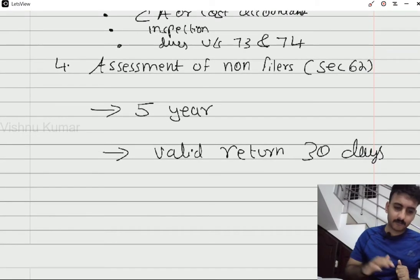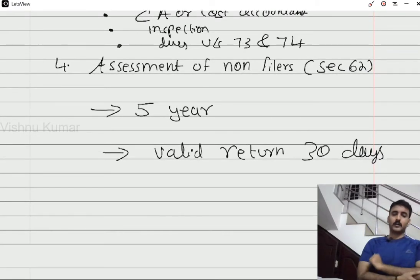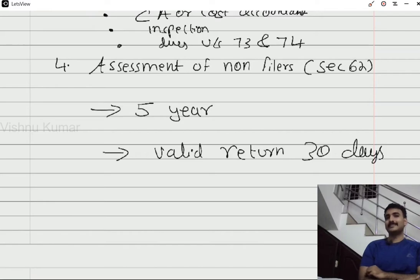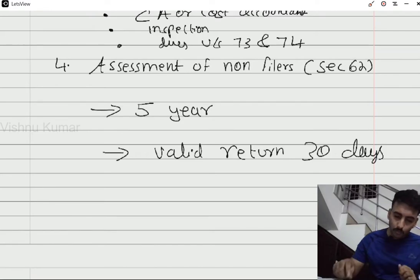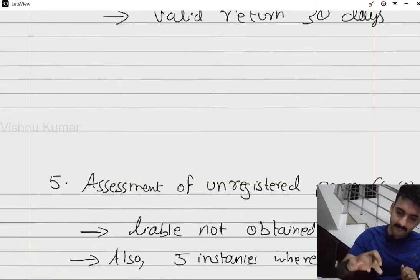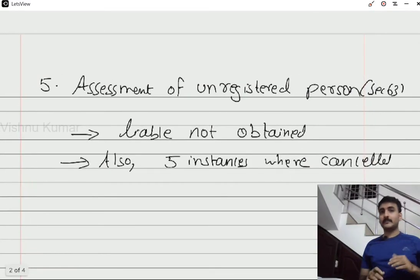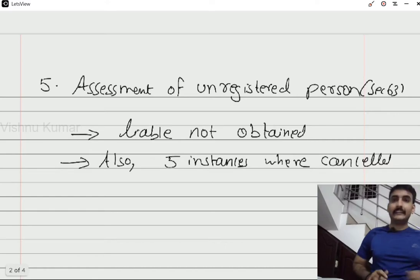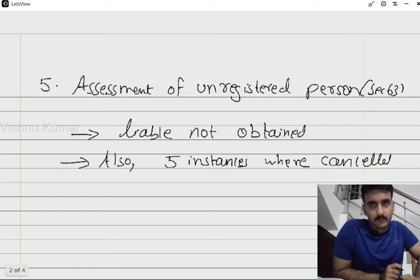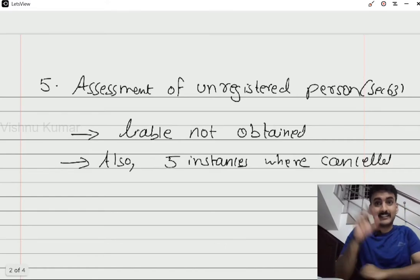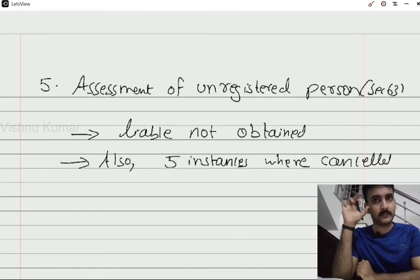Coming to section 62 and 63 — these are best judgment assessments. We have to learn these in detail.